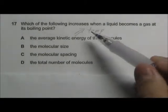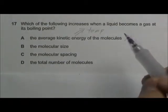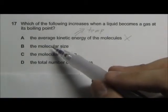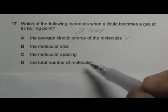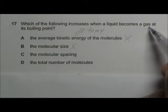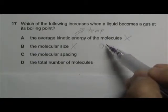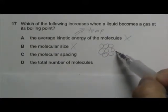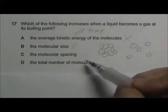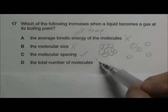During boiling the temperature is constant so the kinetic energy will be constant, A is wrong. When the liquid becomes a gas the molecular size will not change, it will stay constant so this is wrong as well. From liquid to gas, the molecular arrangement will become like closely packed together to molecules being far apart from each other. So C is correct and the total number of molecules will not change, so the answer is C.